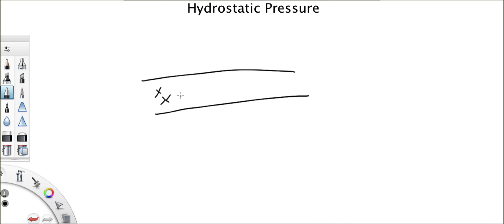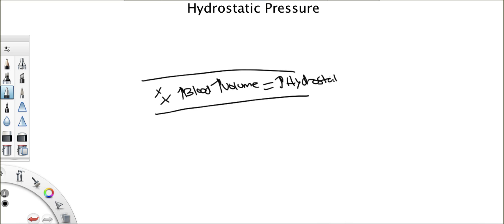What determines hydrostatic pressure? The amount of blood or volume inside the blood vessel. The more blood you have, the more volume you have, the higher the hydrostatic pressure. Now there's hydrostatic pressure inside the blood vessel — what does this pressure do? It pushes fluid out, because this pressure is so high.